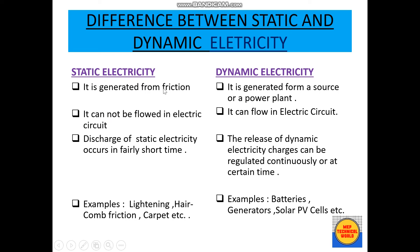Static electricity cannot flow in an electrical circuit, while dynamic electricity can flow in an electrical circuit. The discharge of static electricity occurs in a fairly short time; however, the release of dynamic electricity charges can be regulated continuously or at a certain time. Examples of static electricity include lightning, hair, and friction on carpet. Examples of dynamic electricity include batteries, generators, and solar PV cells.